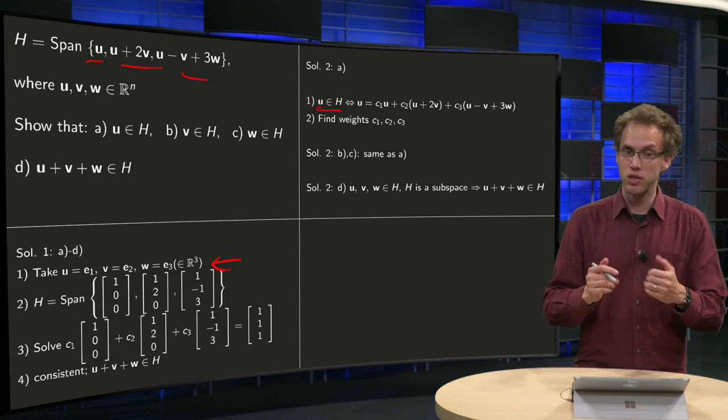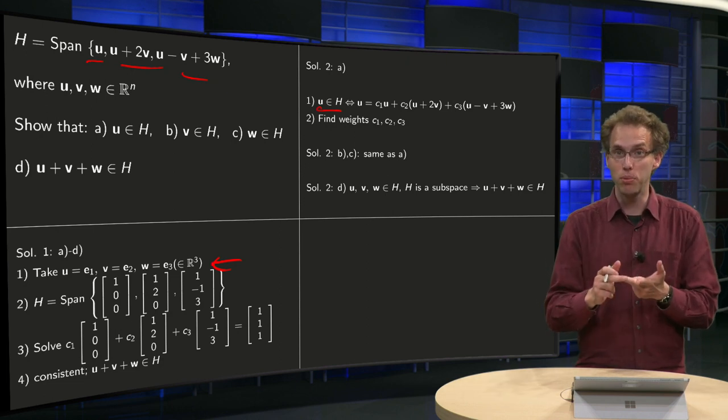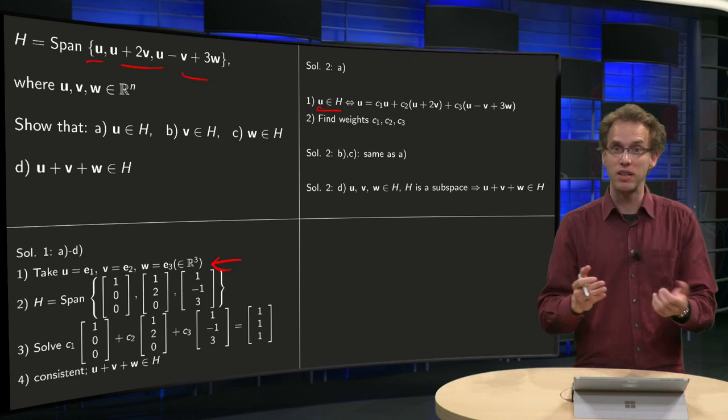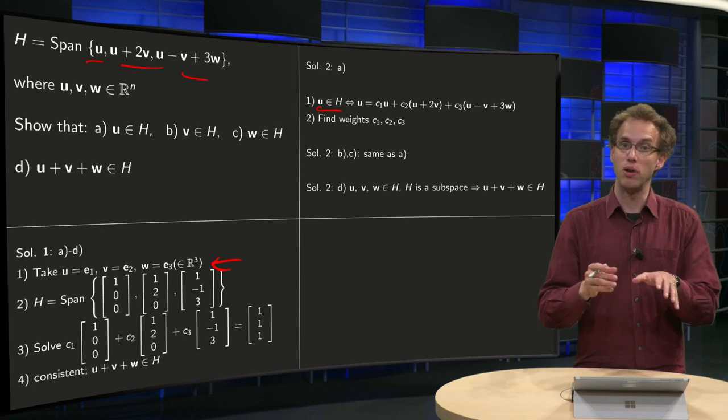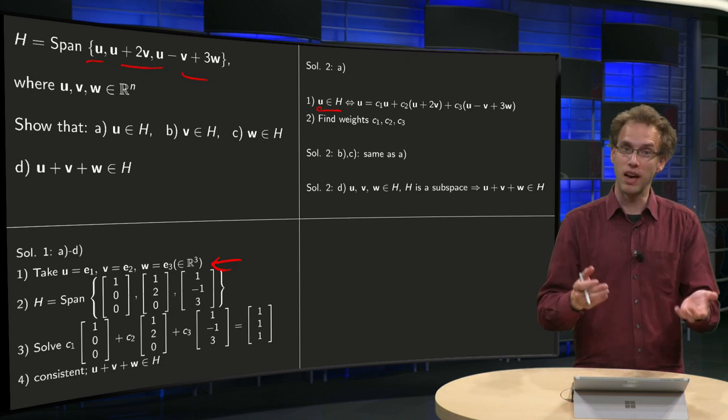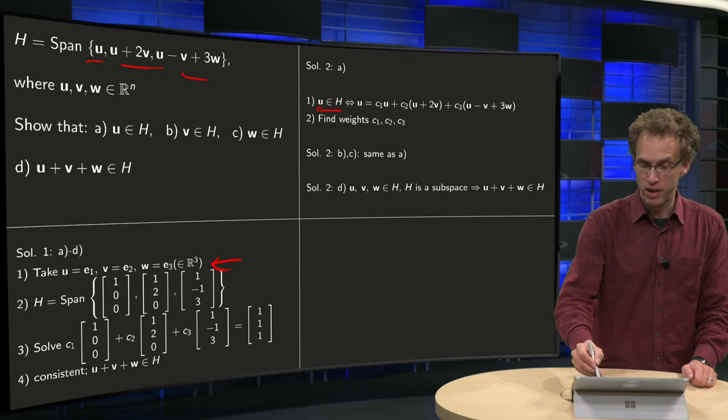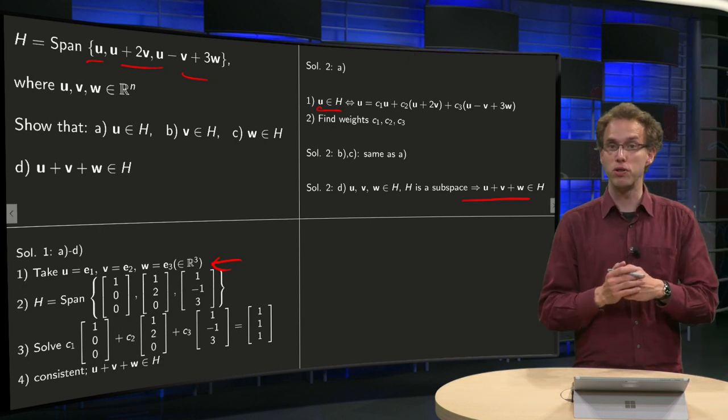A nice way to do this: if you know that U is in H and V is in H and W is in H and you know that H is a subspace, then you know it's closed under addition, so U plus V is in H as well, and you do it again and then you know U plus V plus W is in H. So that's one way you can conclude that U plus V plus W is in H.